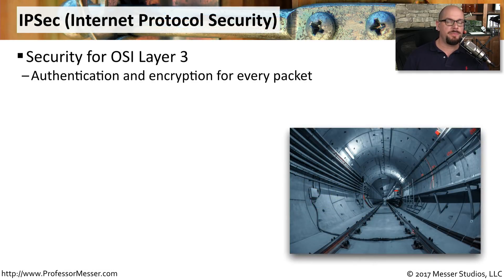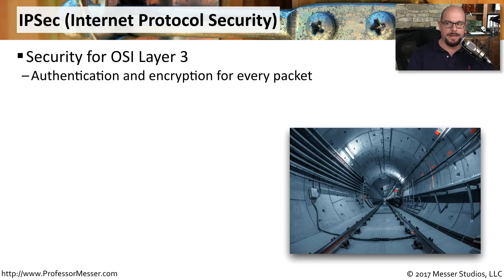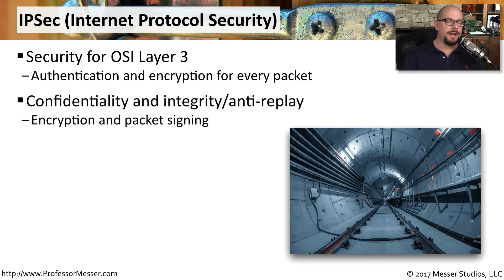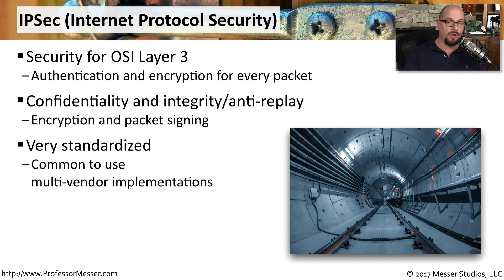Most site-to-site VPNs encrypt traffic using Internet Protocol Security, or IPsec. This allows layer 3 encryption of all IP traffic from one site to the other. Not only does IPsec provide confidentiality through encryption, it also allows an integrity check so you can be sure nobody is replaying traffic through the VPN connection. This is also a very standardized protocol, meaning one manufacturer's firewall on one side and a completely different manufacturer's firewall on the other side can still communicate using IPsec.